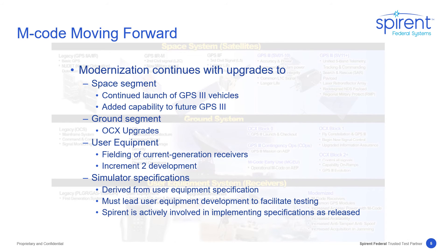Looking at what's in store for M-code moving forward, the rollout is approaching operational status. Presently, all but seven satellites are capable of transmitting M-code in the constellation, and user equipment is being fielded. The modernization effort continues with a roadmap for space and user segments and simulator capabilities. Block III satellites are currently being launched, with four GPS-3 satellites in orbit, and future builds will include additional capabilities.